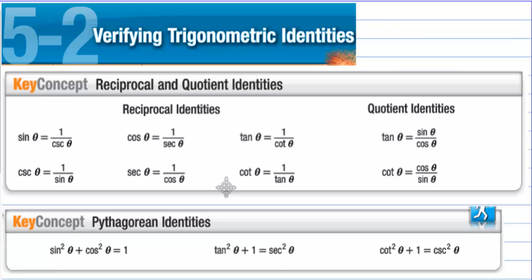Section 5.2: verifying trigonometric identities. Here are the tools that we have in order to verify these identities. We have the reciprocal identities, we have the quotient identities, and we have some Pythagorean identities that we can use.